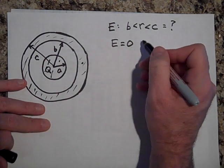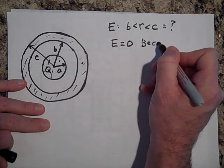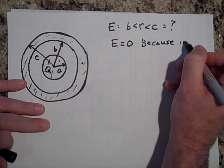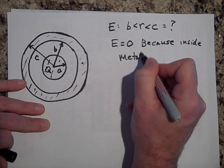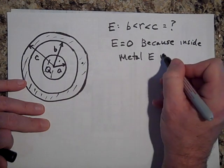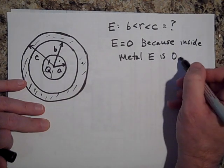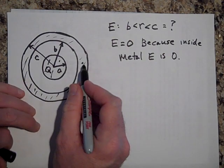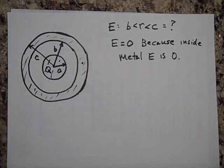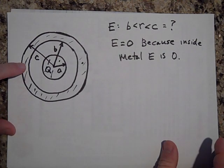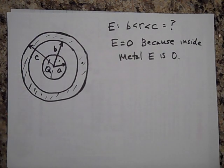And that's because it's in the metal because inside metal E is zero. If it weren't zero, the charges wouldn't be in equilibrium. They'd be moving around. Remember our argument for that? All right. So we know that.